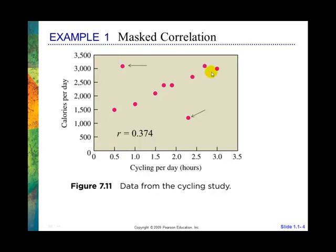Notice we have these two possible points which may be outliers. While this looks very strong, these two outliers have basically removed all correlation, and we have an r of 0.374, which is a very low positive correlation. If we were to remove them, maybe this would go higher. Notice here we have this woman who bicycled about a little more than half an hour but ate 3,000 calories, and this woman who bicycled almost two and a half hours but only ate about 1,200 calories. Those may have been errors somehow — this may have supposed to have been 2,100 calories.